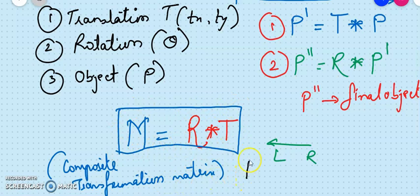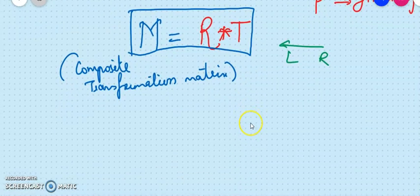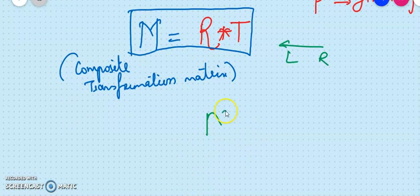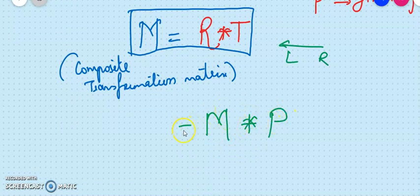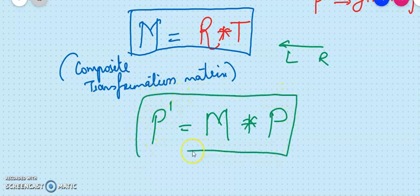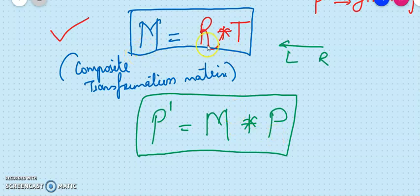Once you get the M matrix — the composite transformation matrix — the process is very simple. Your next step is to multiply this composite transformation matrix by your point matrix, which will give you the final matrix. So the first step is to find the composite transformation matrix, and the second step is to find the final coordinates given the initial position of the object. The composite transformation matrix is the multiplication of all the matrices of all the transformations you are going to perform on your object. Finally, multiply it with the point matrix to give you the final result.